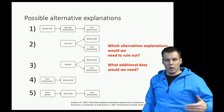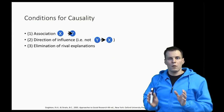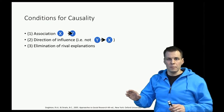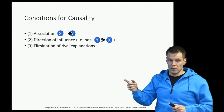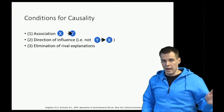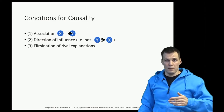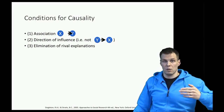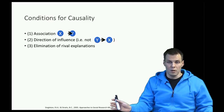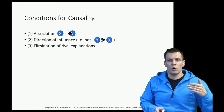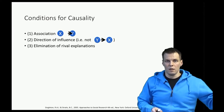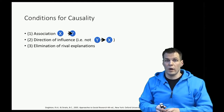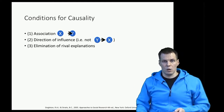To rule out alternative explanations, we consider three conditions for causality. First, there must be a statistical association between cause x and effect y — not necessarily a correlation, but some form of association. If cause and effect don't depend on one another at all, we can't make a causal claim. Second, we must show a direction of influence: the cause x must always come before the effect y, not the other way around. Third, we must achieve elimination of rival explanations.